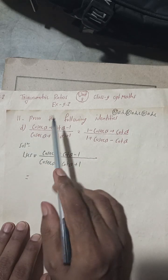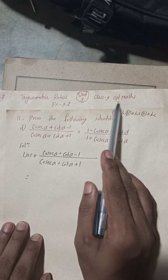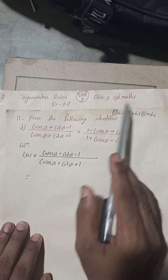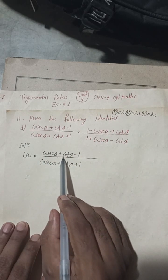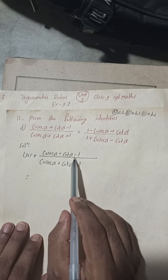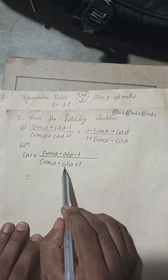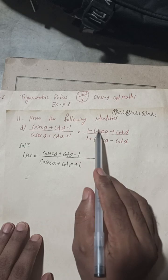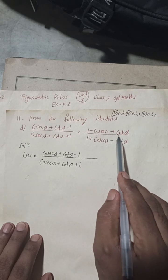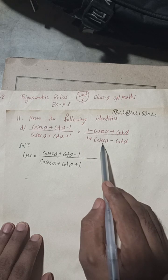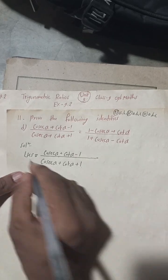This is 11d of Exercise 9.2, Trigonometric Ratios, Class 9 Optional Maths. The LHS is (cosec α + cot α - 1) / (cosec α + cot α + 1), and we have to prove this equals (1 - cosec α + cot α) / (1 + cosec α - cot α). Let's begin the solution.